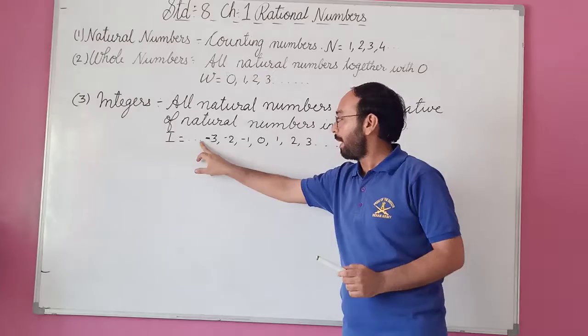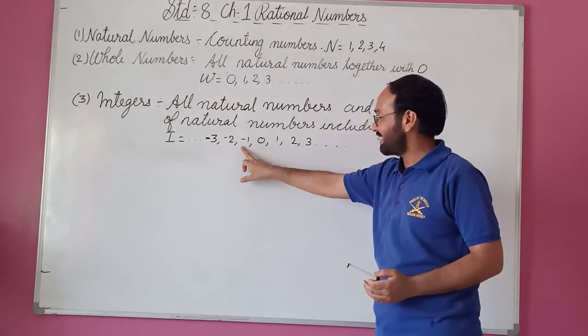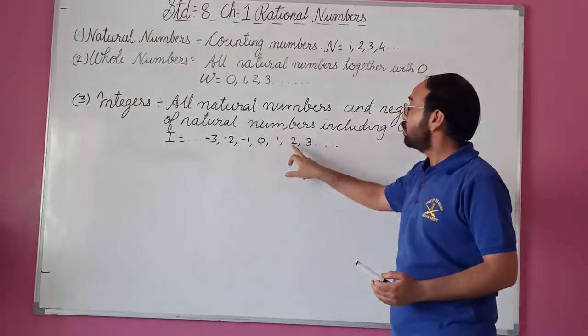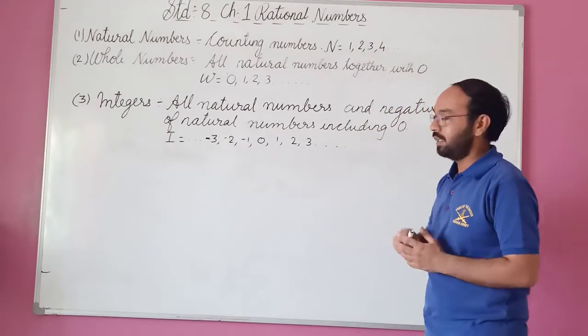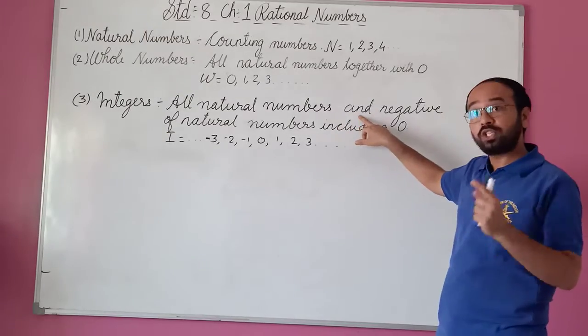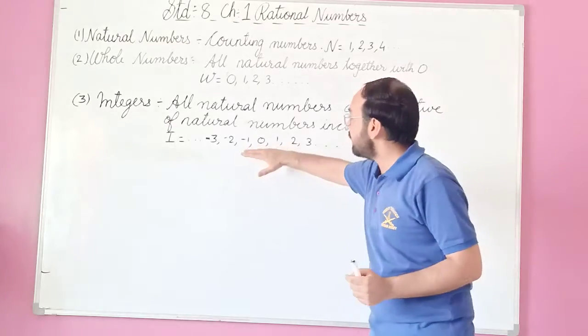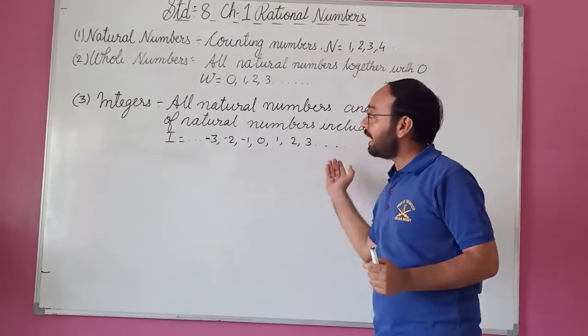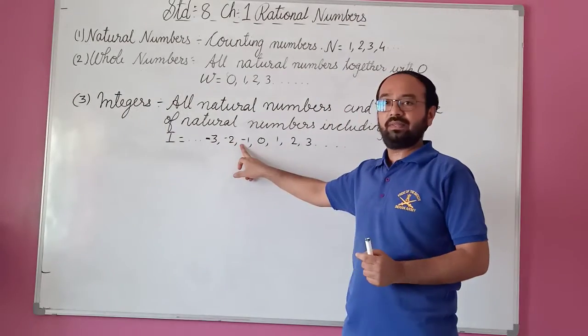For example, it starts from minus three, minus two, minus one, zero, one, two, three. From here the numbers are zero, one, two, three. Here in the definition it was mentioned negative of natural numbers, that's minus three, minus two, minus one.